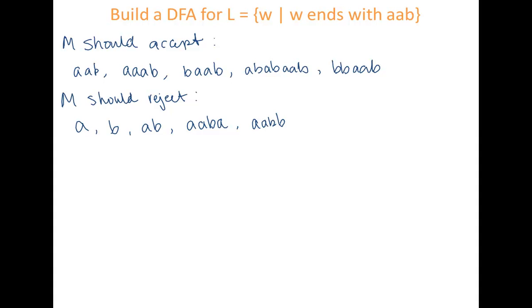What we notice is we want to keep track of the sequence AAB. And then if we see anything after that, we're going to reject. If I see AAB and then a single B, I should reject. I will reject unless I see AAB as that sequence and then the immediate end of the string.